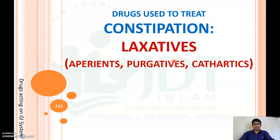In this video we discuss the pharmacology of drugs used to treat constipation. The drugs used to treat constipation are known as laxatives and purgatives. There are other synonyms such as cathartics and aperients, and these names are given according to the intensity of action to evacuate the bowels.